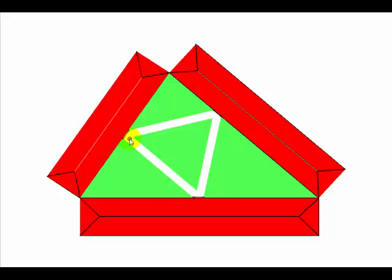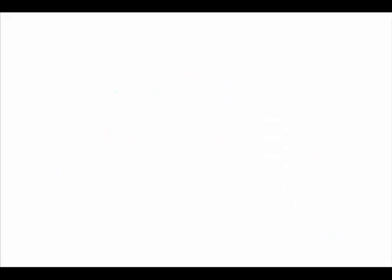This problem was first proposed and solved by Fagnano in its abstract form, and he used calculus. But we will be using geometry. So let's get started using this arbitrary scalene triangle PQR representing the building, and we have to find this walkway whose length is to be minimized.